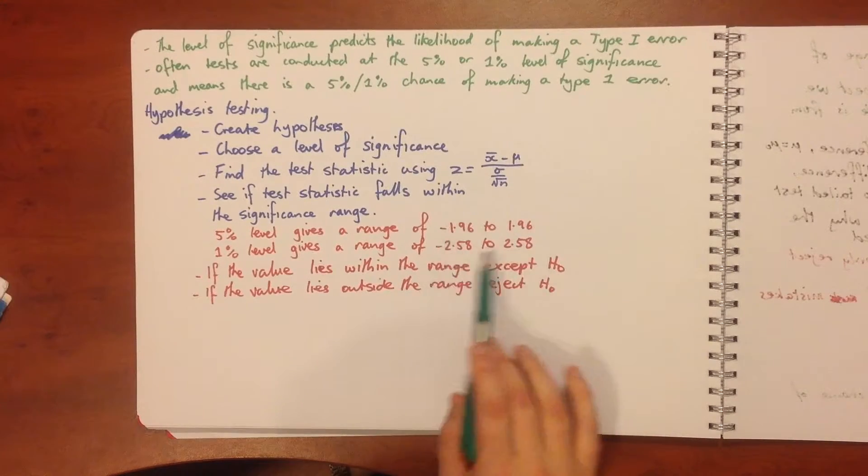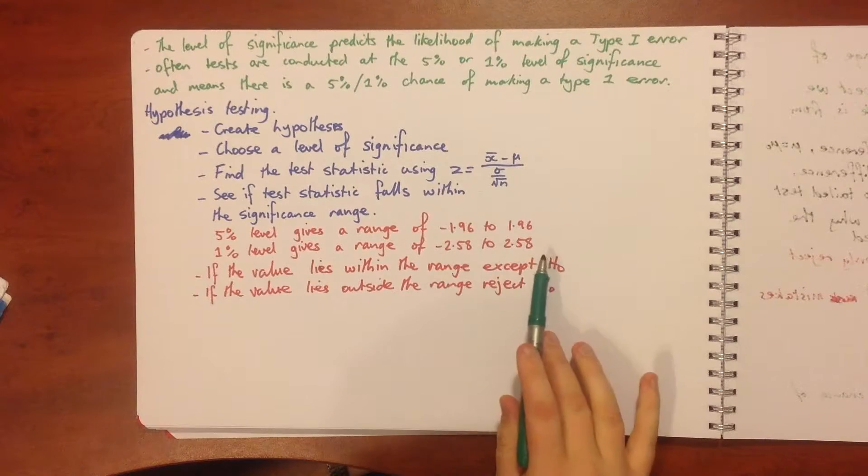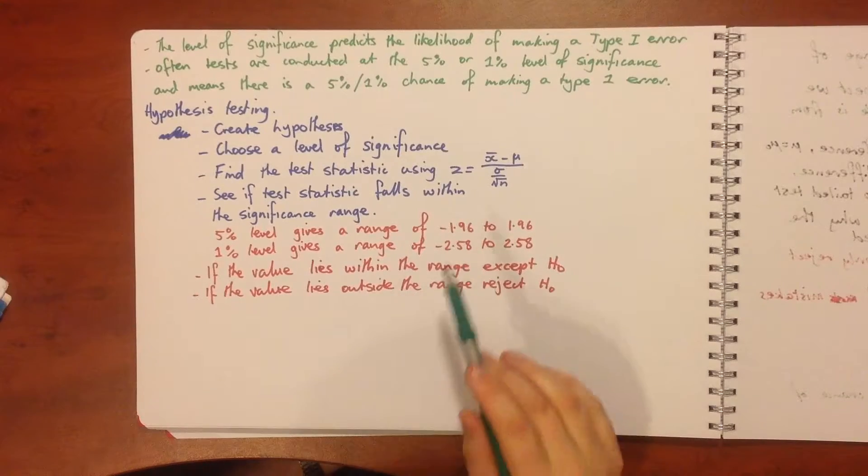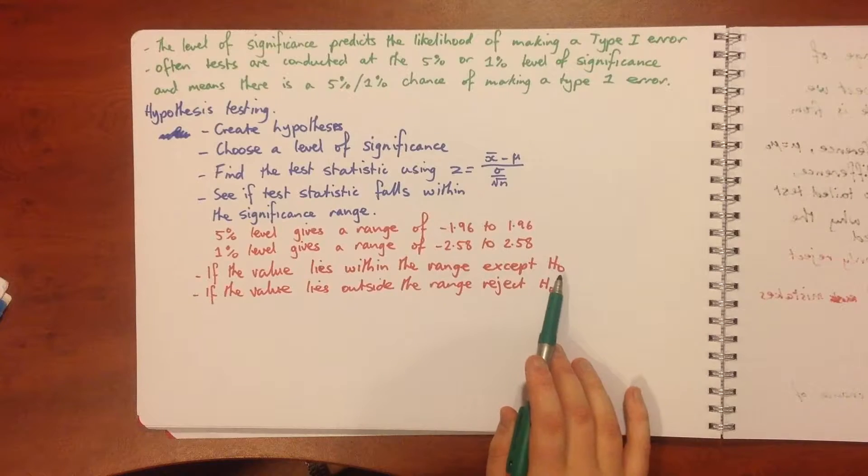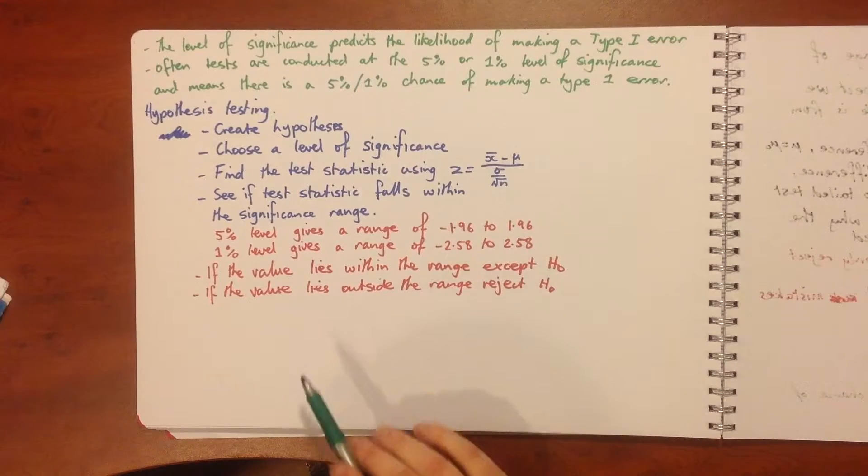Remember these are our z values that we use in the first place to find our confidence interval from our last tutorial. So if the value lies within the range then we accept our H naught. If it sits outside that range then we need to reject our null hypothesis.